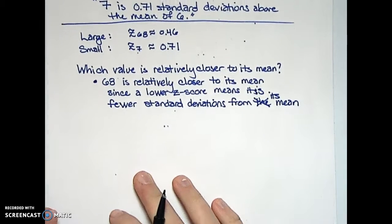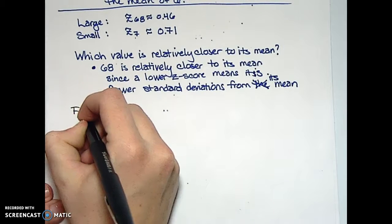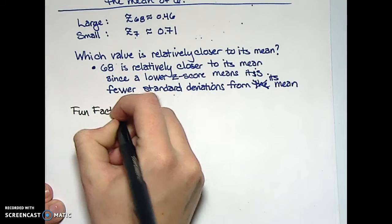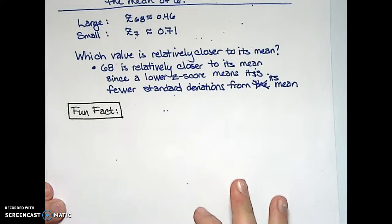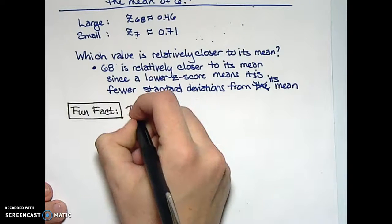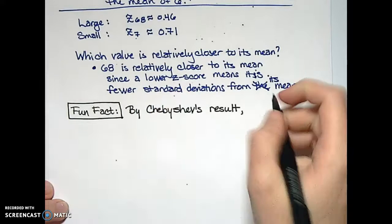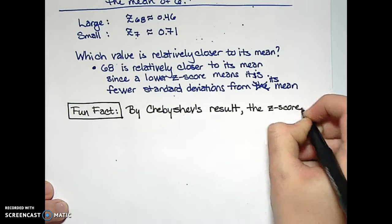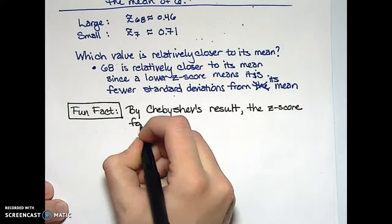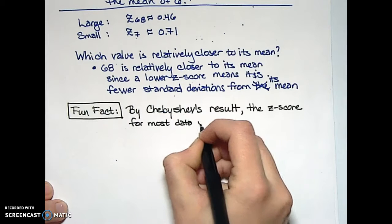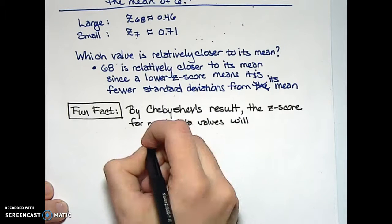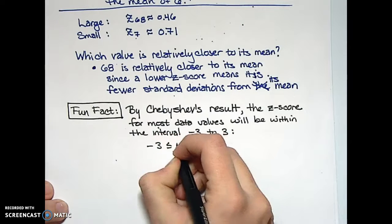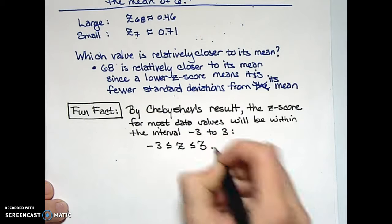There's one final fun fact to consider in talking about z-scores, and this comes from our Russian mathematician Chebyshev. Recall that Chebyshev's theorem deals with the number of data values that would be within so many standard deviations of the mean. By Chebyshev's result, the z-score for most data values will be within the interval negative three to three — the z-score is almost always going to be between negative three and three.